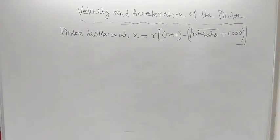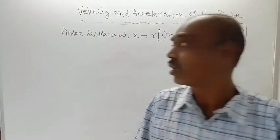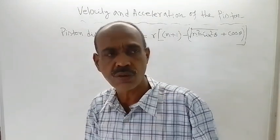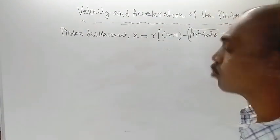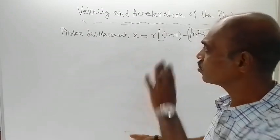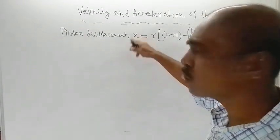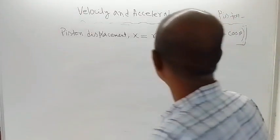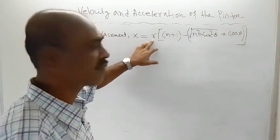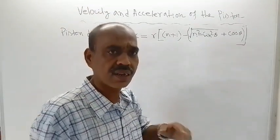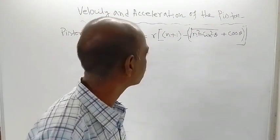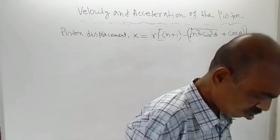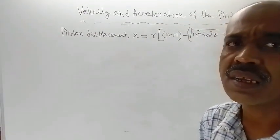Good morning. In the last class, this topic was discussed: velocity and acceleration of the piston. In the last video, only the expression for displacement was obtained. Displacement of the piston was denoted by x, where x = r · (n + 1 - √(n² - sin²θ) + cosθ). Here, r is the crank radius, n = L/r is the length of the connecting rod divided by the crank length, and θ is the angle made by the crank with the horizontal line connecting the piston and the center of the crank.